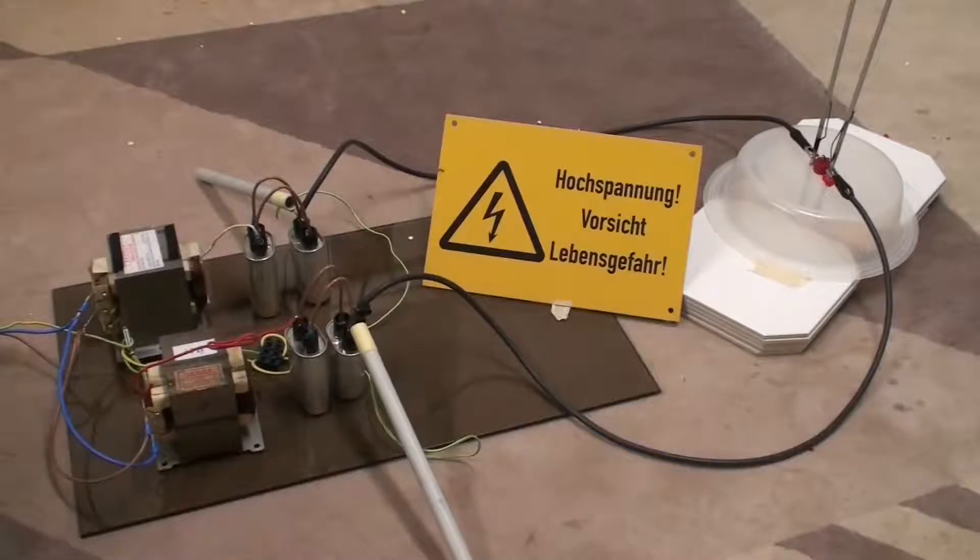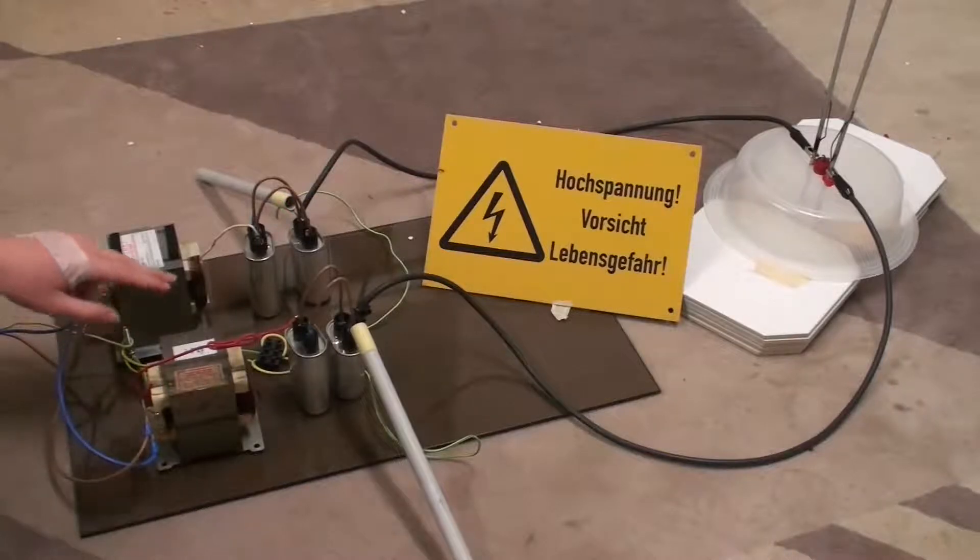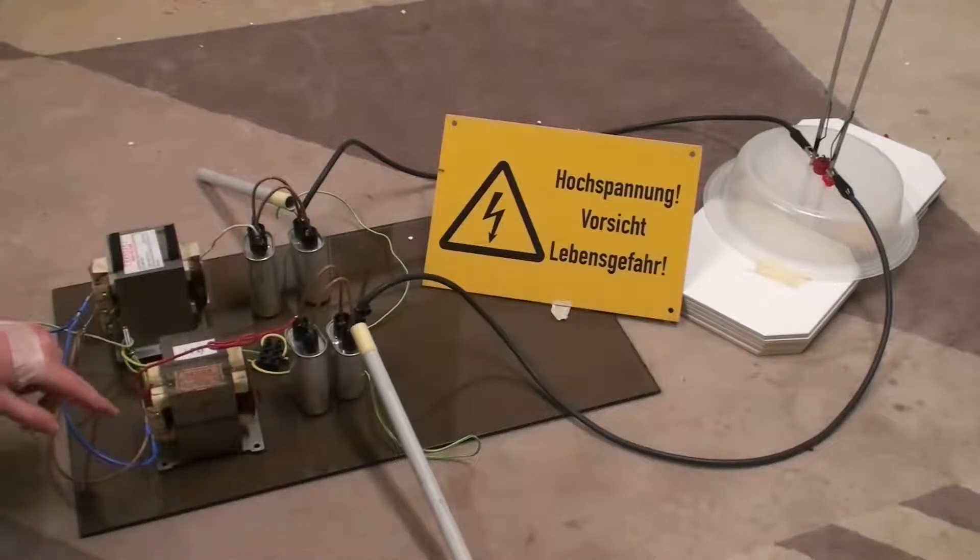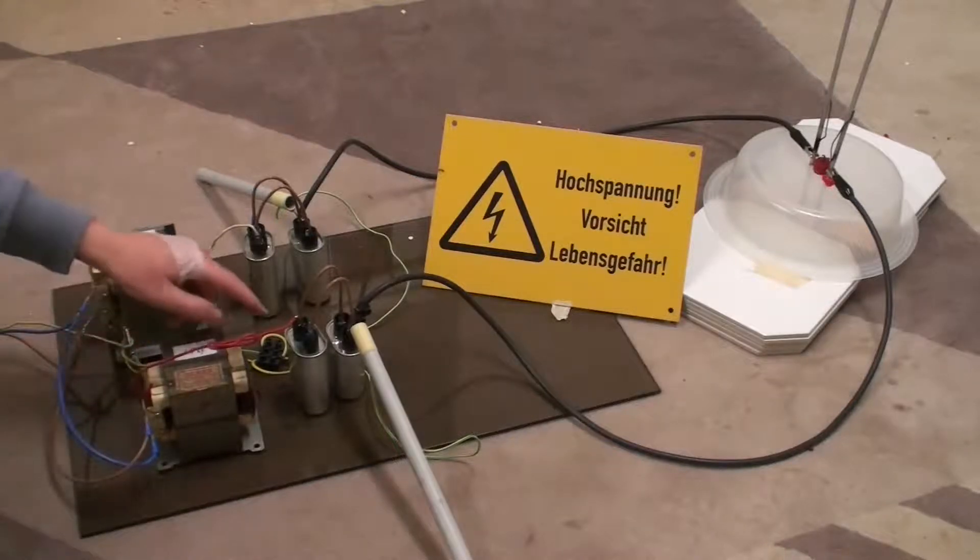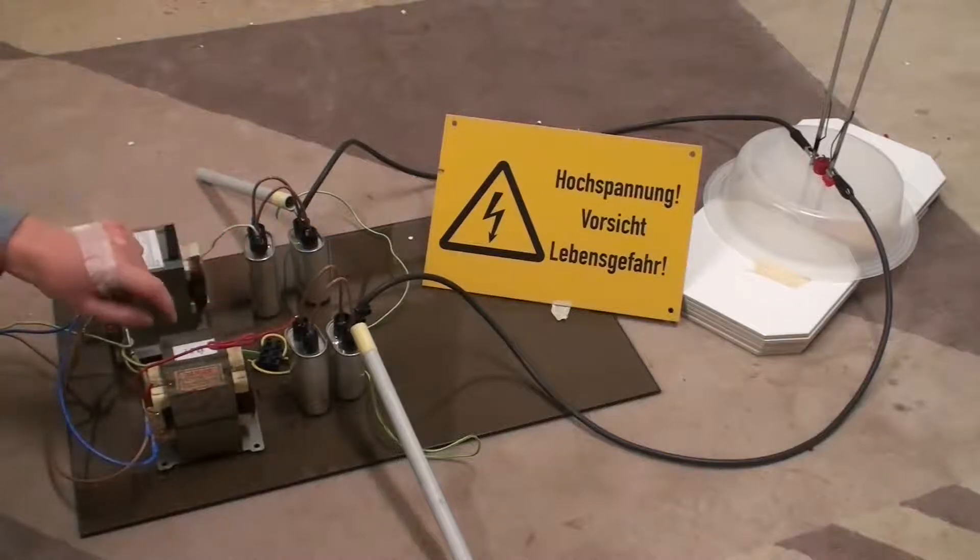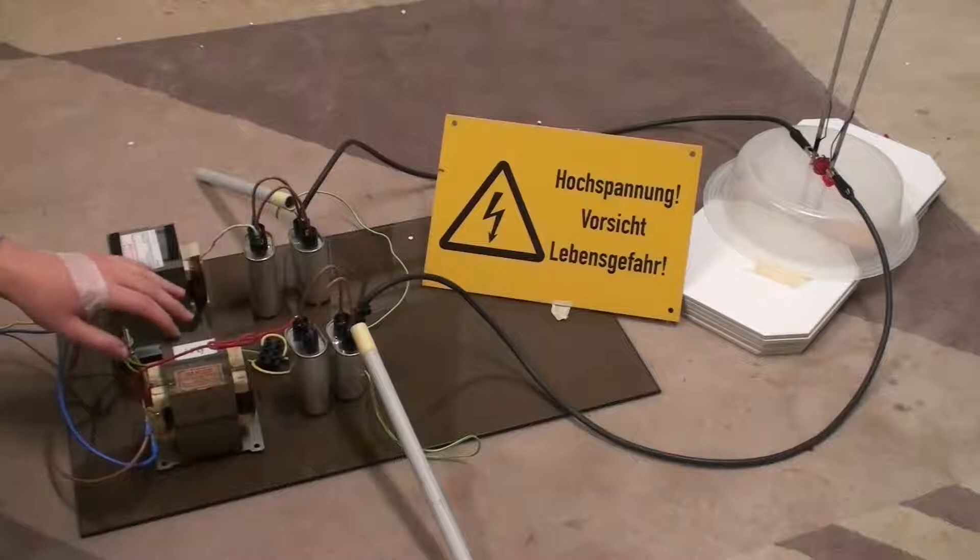This is my setup. We basically have two microwave oven transformers with the primaries wired in parallel and the secondaries wired in series. I've connected the two cores together and phased them such that the output voltage on these two high voltage terminals add up. So we get about 4kV out of these two transformers.